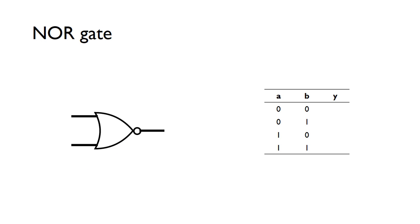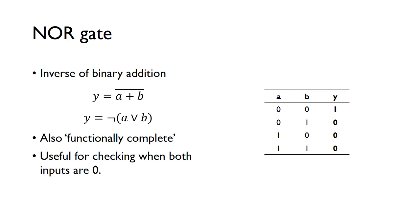A NOR gate is similar — it's just an OR gate with the output inverted, indicated by the bubble. It has the same shape as the OR gate. From the OR function we know that any time one of the inputs is a one, the output is a one, and a NOR gate is just the inversion of this. NOR is also functionally complete, meaning you can make all logic gates from NOR gates alone. A NOR gate is useful for checking when both inputs are zero — it's the only case where you get a one on the output.